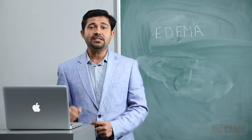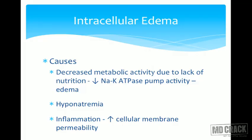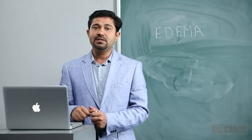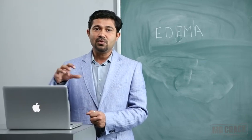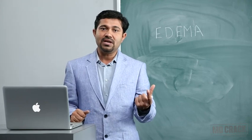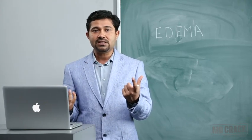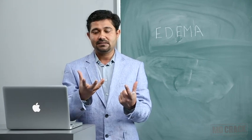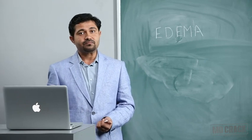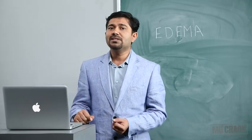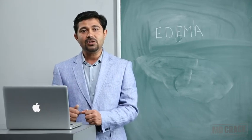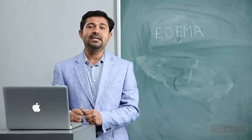The second cause of intracellular edema is hyponatremia. Decreased sodium means decreased extracellular osmolality. Since intracellular osmolality remains the same, water moves by osmosis from the extracellular into the intracellular compartment, increasing cell size. The third cause is inflammation, which increases cellular membrane permeability, allowing more fluid to enter the cell, causing intracellular edema.